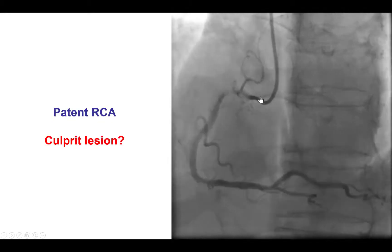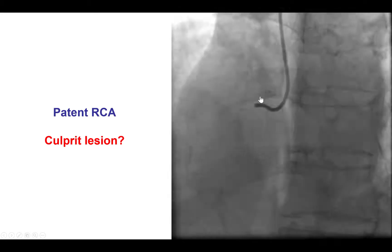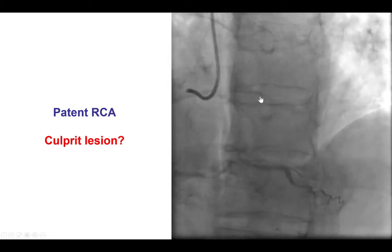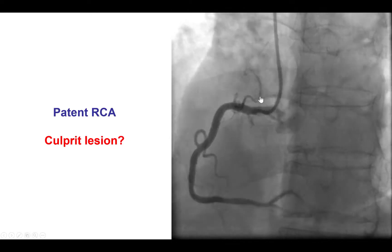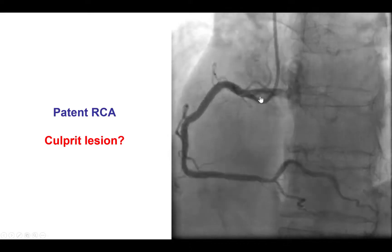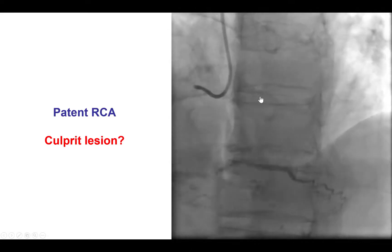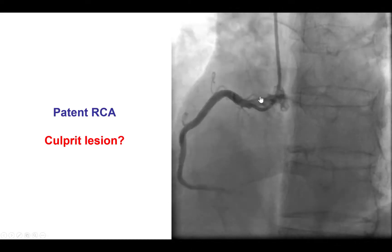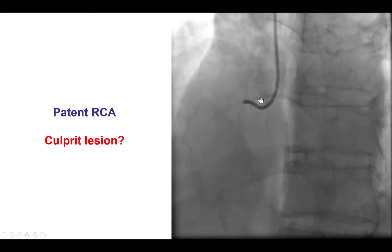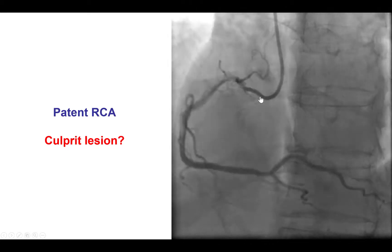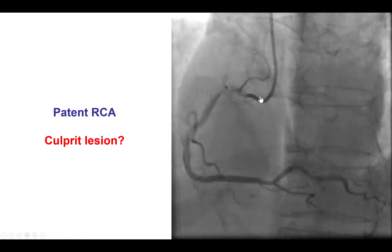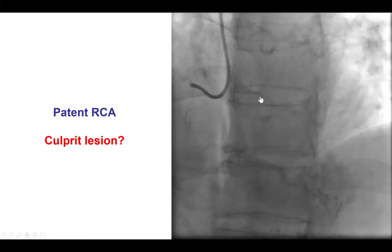We then went to the right coronary artery with a guide, presuming that the patient would likely have a culprit there. But once again, there was no significant angiographic stenosis. At this point, one option was to declare this as MINOCA and do no further investigation. However, the patient did have pretty typical symptoms and EKG findings, so we were wondering whether there was some lesion that maybe geographically was not readily apparent.